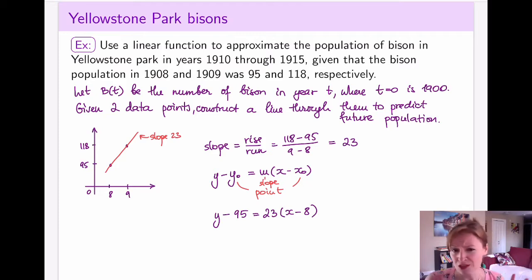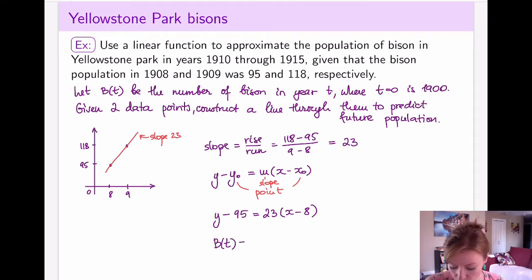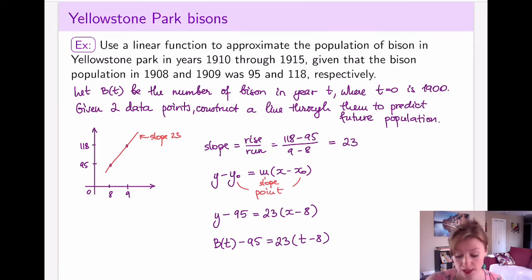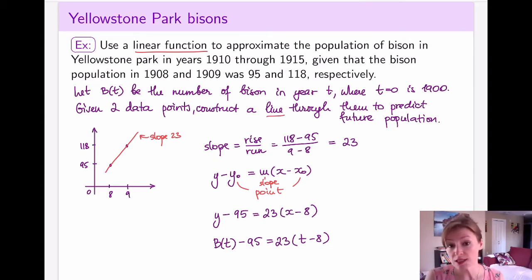Notice that my notation isn't quite right in the most general form. I have the number of bison being B of t, and my independent variable is t. So if I want to rewrite that as the model, my y is B of t and my x's are actually called t, which stands for time. This is the equation of the linear model. The key idea is that I constructed a linear function — a line — using the two points I was given. Now I can use this line to compute the population of bison in future years.